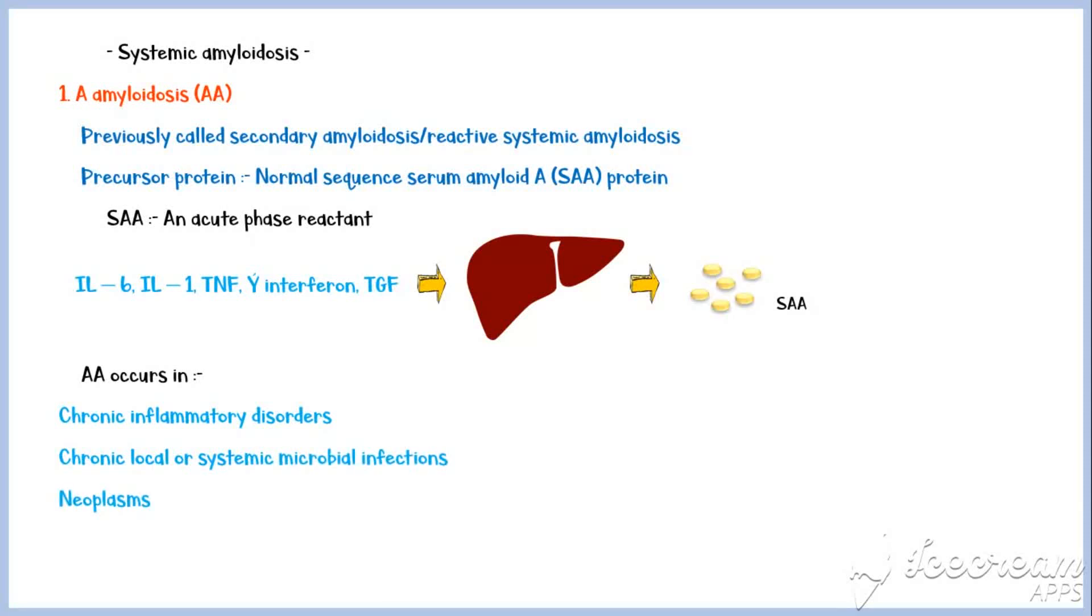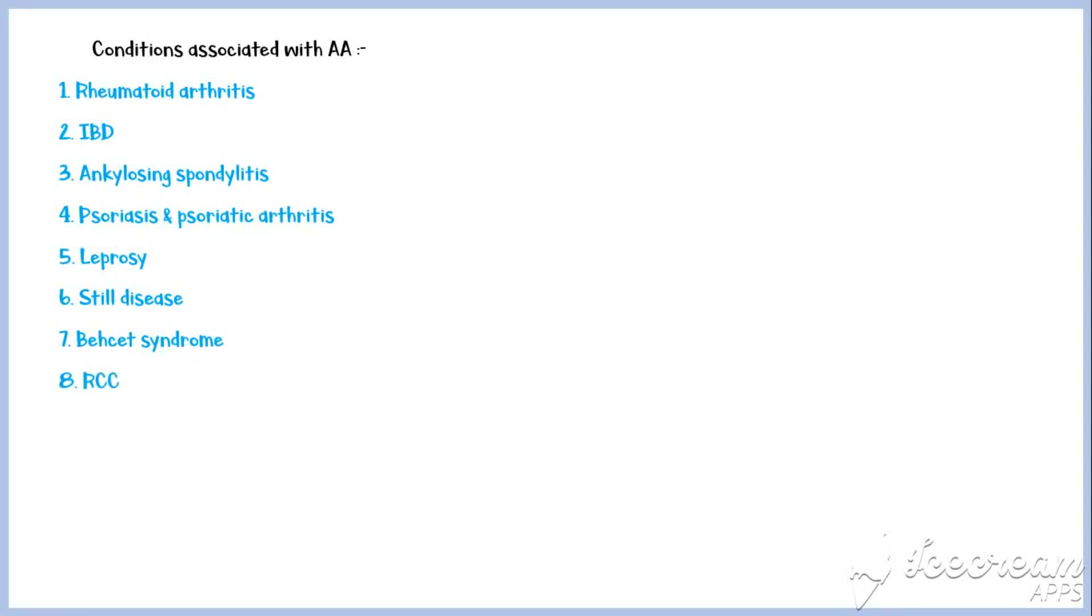Some of the conditions associated with AA amyloidosis include the following: Rheumatoid arthritis, inflammatory bowel disease, ankylosing spondylitis, psoriasis and psoriatic arthritis, leprosy, Still disease, Behcet syndrome, renal cell carcinoma, Hodgkin and non-Hodgkin lymphoma, and Castleman disease.